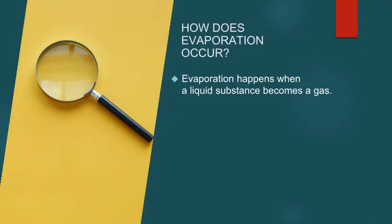So exactly how does evaporation occur? Evaporation happens when a liquid substance becomes a gas. Pretty simple, right?